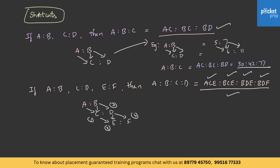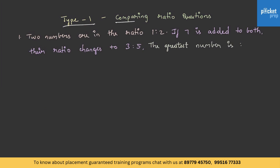This is how you solve the general questions asked in ratio and proportion. Try out an example for this formula. Hope you have understood the shortcuts. Type 1: comparing ratio questions. Two numbers are in the ratio 1 is to 2. If 7 is added to both, their ratio changes to 3 is to 5. What is the greatest number?